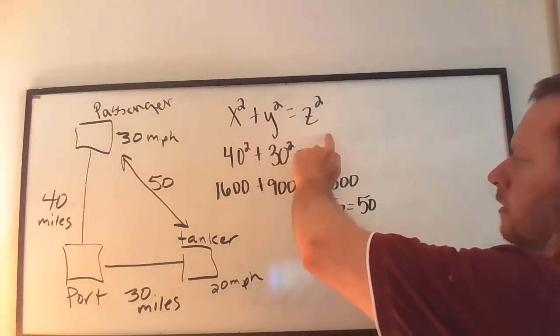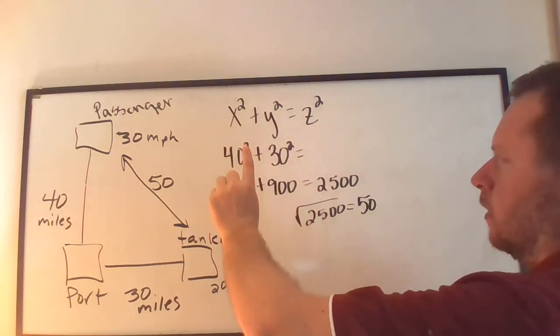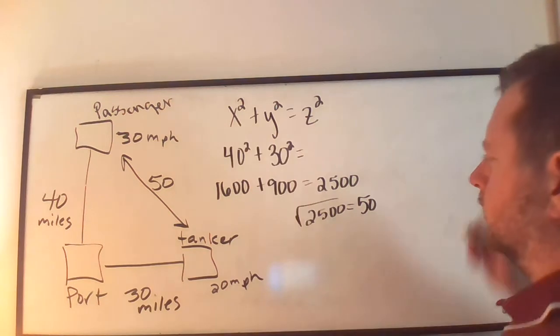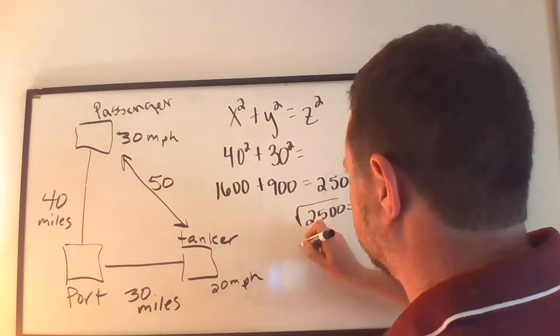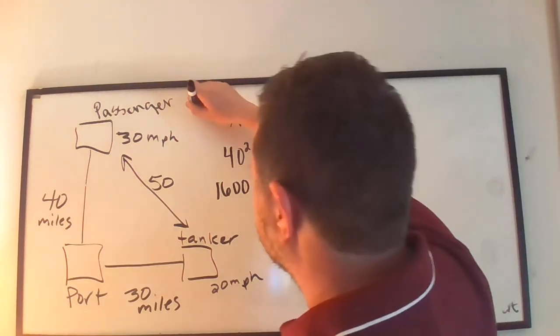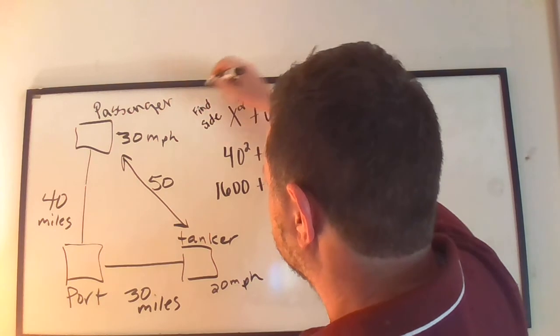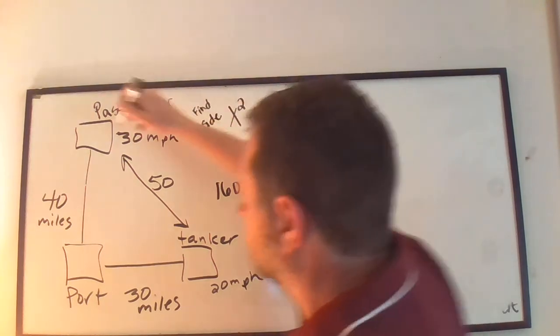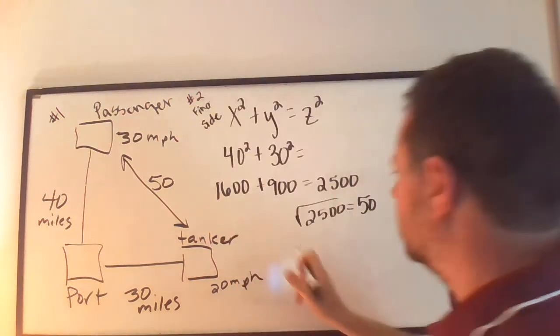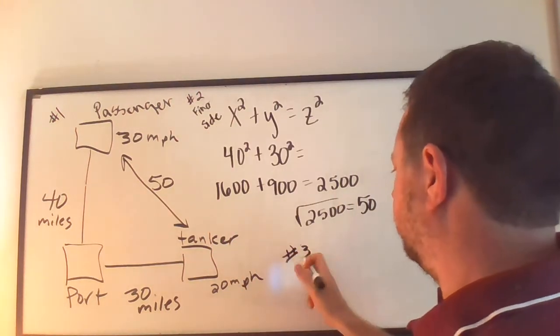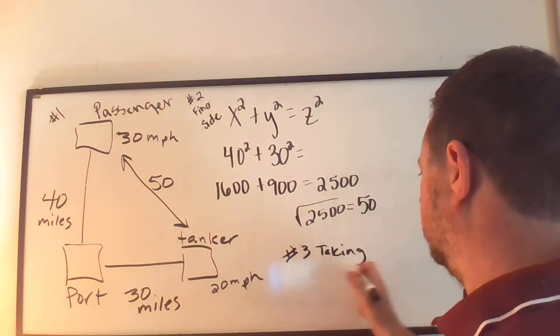This is our equation and we're going to take the derivative of this. Let's call setting up the picture step one, finding the side step two, and step three taking derivative.